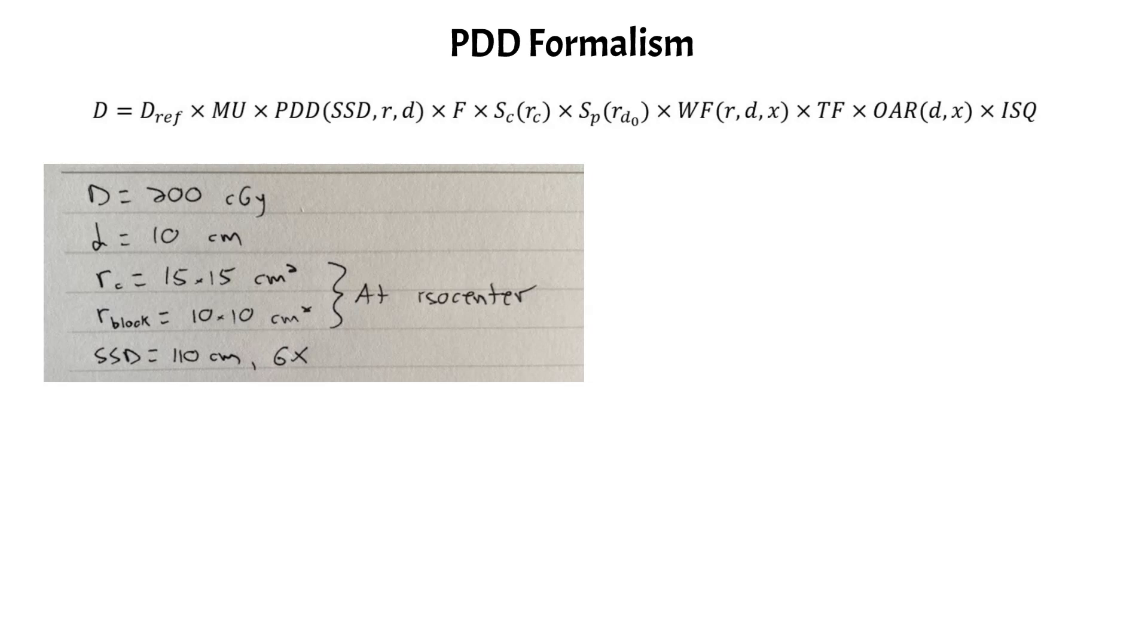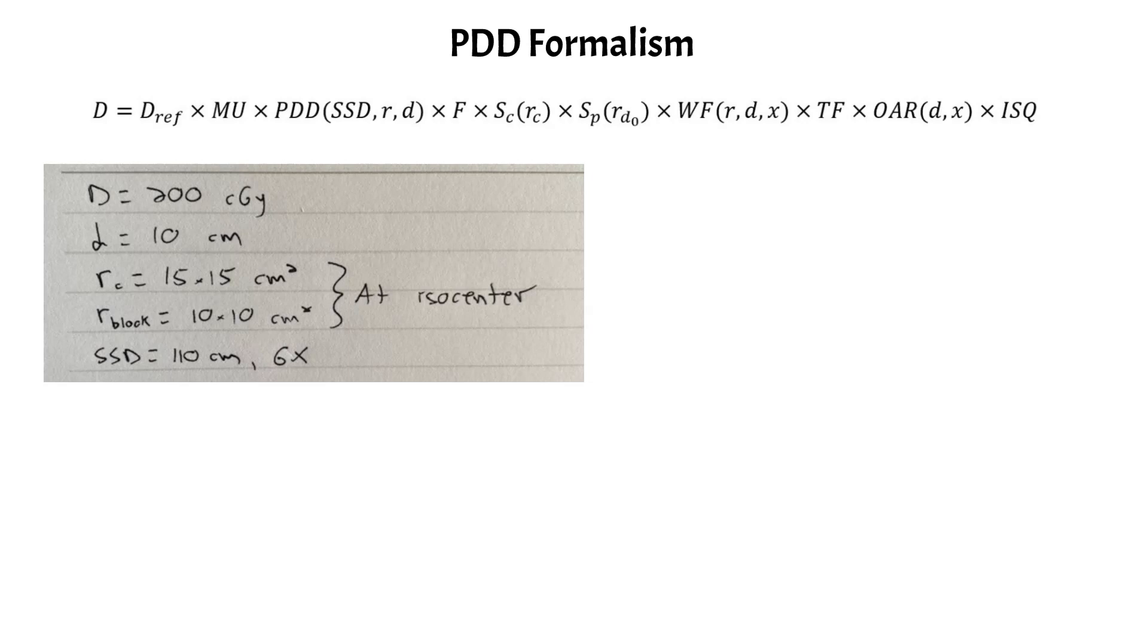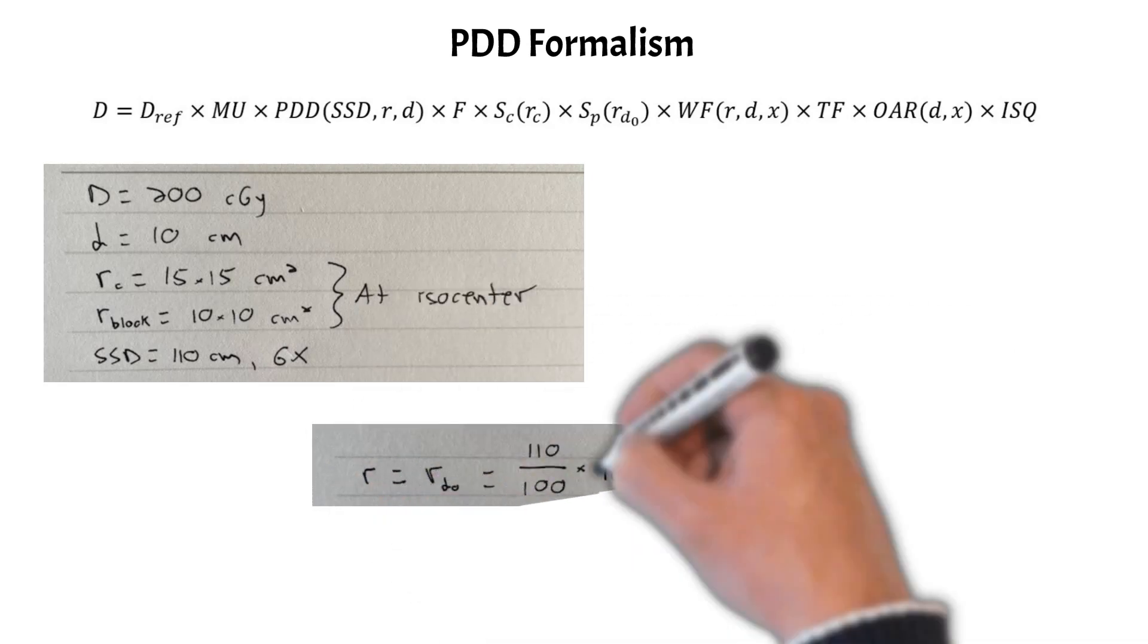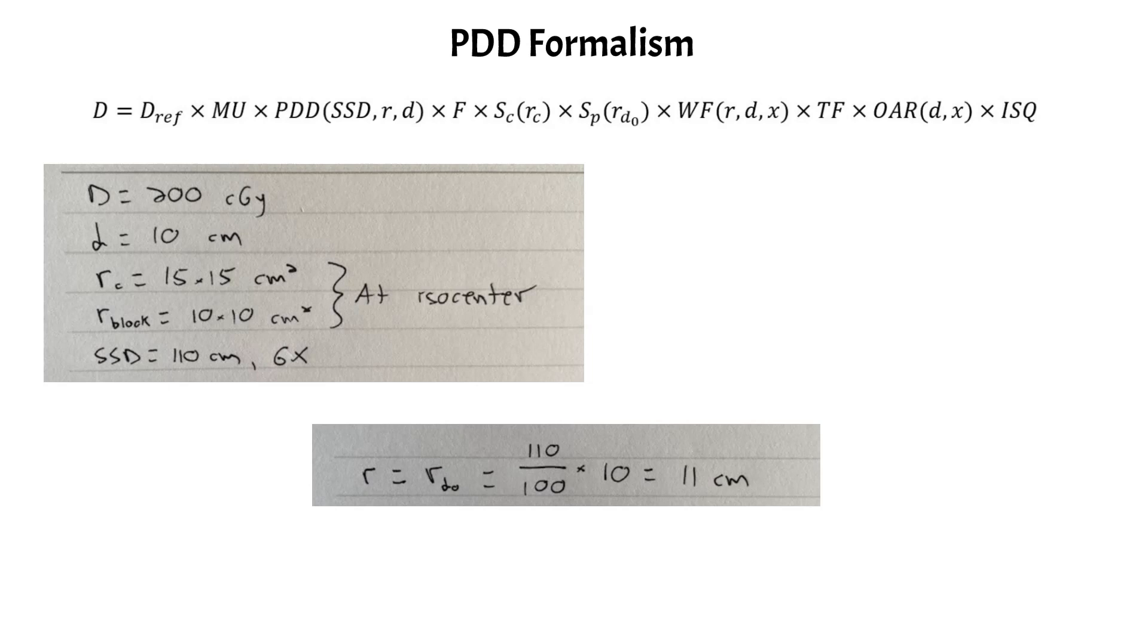And if we just stare at that equation for a little bit, you should notice that we need to calculate the field size at the surface, which is R in this equation. You're given RC and the block field size at the isocenter. So to calculate the field size at the surface, we just need to take into account beam divergence, which is just going to be taking our source to surface distance of 110 and dividing it by the source to isocenter distance of 100 and multiplying it by the blocked field size.